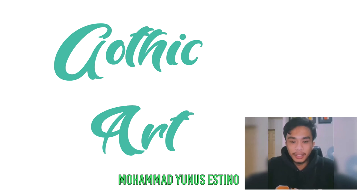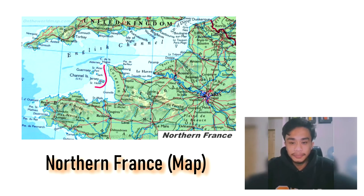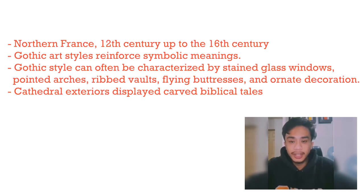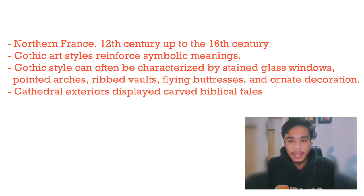The last medieval art style was Gothic art, which lasted from the 12th century to the 16th century. Gothic art reinforced symbolic meanings. The church symbolizes the transcendence of the soul, with an underlying philosophy to create buildings of height and light. Gothic art is characterized by stained glass windows, pointed arches, ribbed vaults, flying buttresses, and ornate decorations. Cathedral exteriors display carved biblical tales, and figures are often elongated to fit the narrow spaces that housed them.